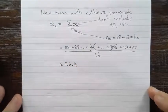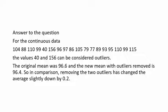So to answer the question for the continuous data 104, 88, 110, and so on down this list, the values 40 and 156 can be considered outliers. The original mean was 96.6, and the new mean with outliers removed is 96.4. So in comparison, removing the two outliers has changed the average slightly down by 0.2.